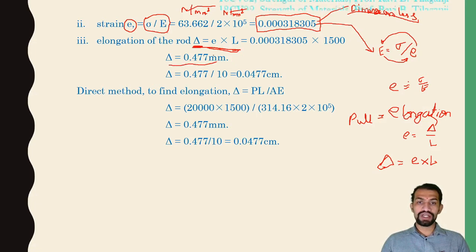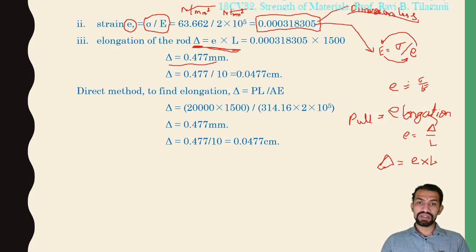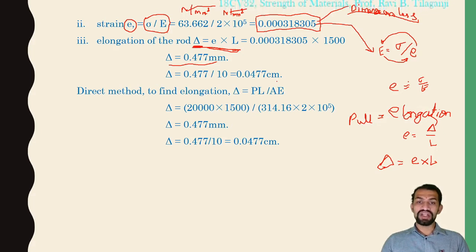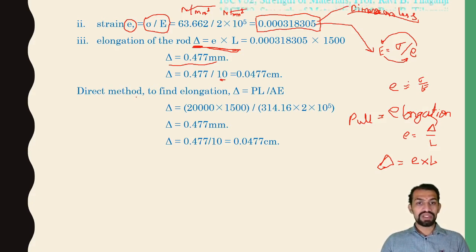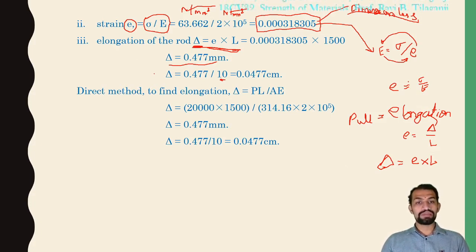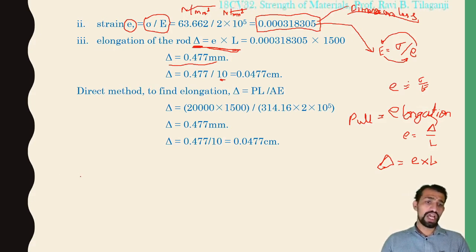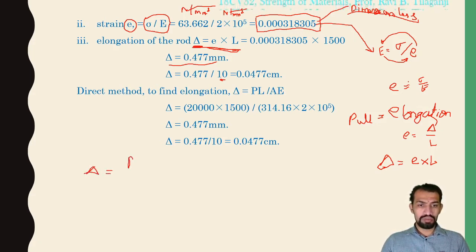Converting to centimeters: 0.477 mm ÷ 10 = 0.0477 centimeters. Now, the direct method to find elongation: we do not need intermediate steps. There is a direct formula — change in length = P × L / (A × E).